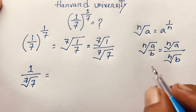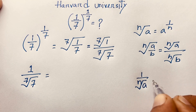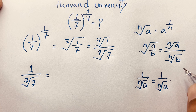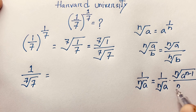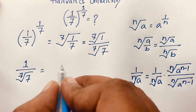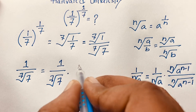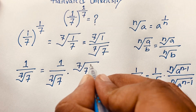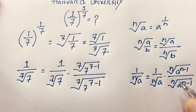We know the exponential law: 1 over n-th root of a equals 1 over n-th root of a, times n-th root of a to the power (n minus 1), over n-th root of a to the power (n minus 1). According to this law, I can say: 1 over 7th root of 7, times 7th root of 7 to the power (7 minus 1), over 7th root of 7 to the power (7 minus 1).